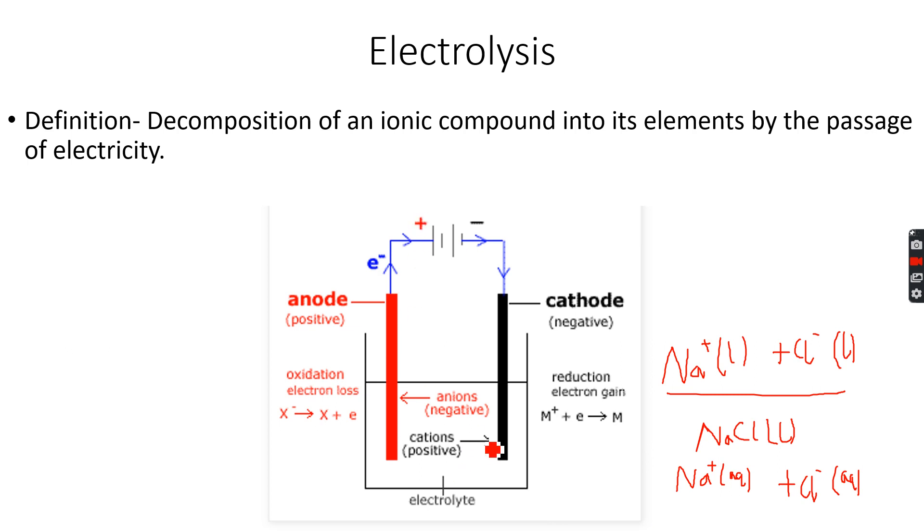Now let's take molten NaCl in this example. Molten NaCl is basically no water present, only Na+ and Cl- ions in the electrolyte. So we have a cell over here, you can see positive and negative terminals and we have electrodes. The positive electrode is called the anode and the negative electrode is called the cathode.